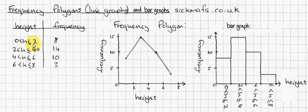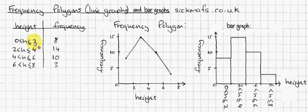This category 0 to 2 is for height — we don't know what unit it is, meters or something. So 8 people are in this category, 14 in this one, 10 in this one, and 3 in this one. If you're not sure about what this all means, go to the inequalities video. Very briefly, that's just saying from 0 to 2, not including 0 but including 2. This one is not including 2 but including 4 — basically, you're not overlapping groups.